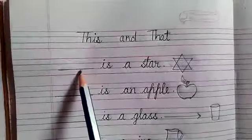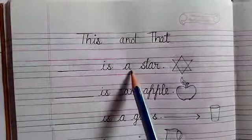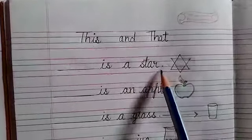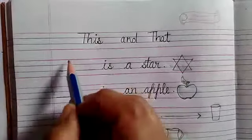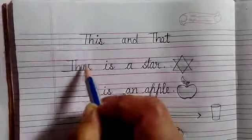Here, number 1. Blank is a star. Star is near. So in the blank we have to fill this. T-H-I-S this.